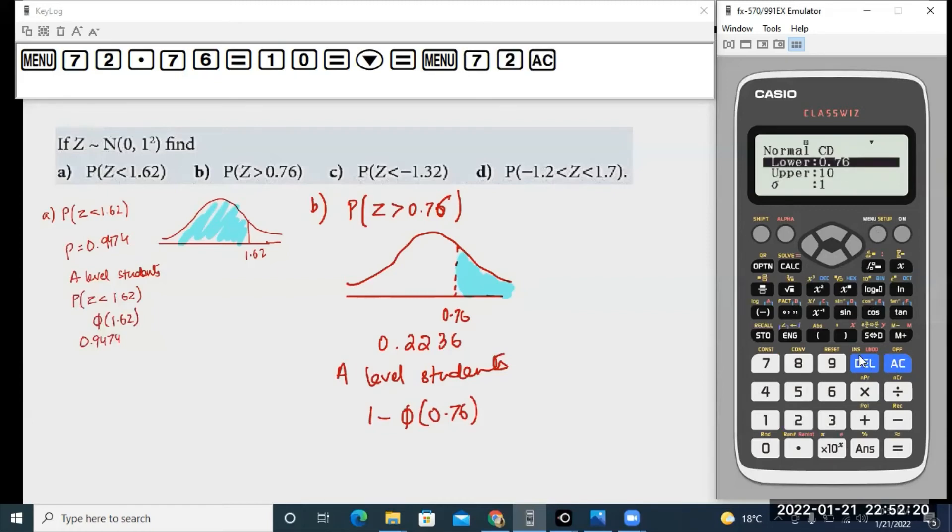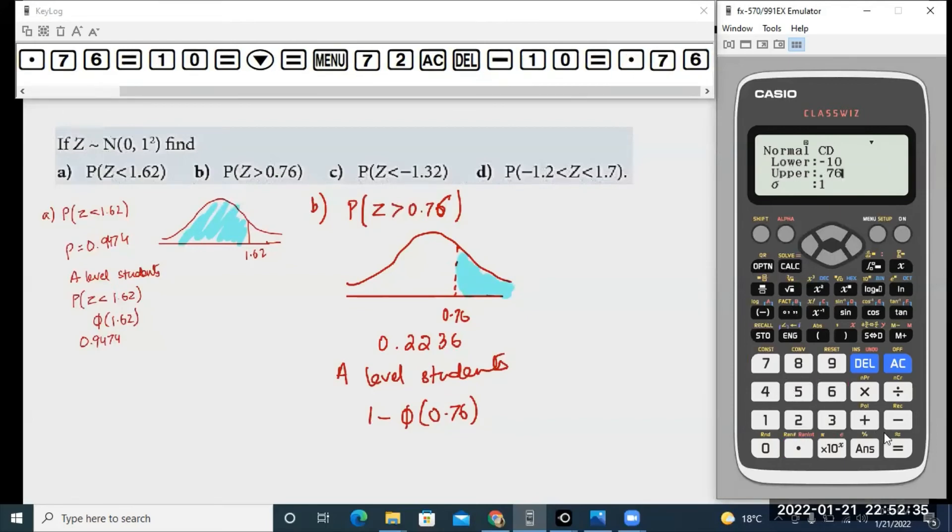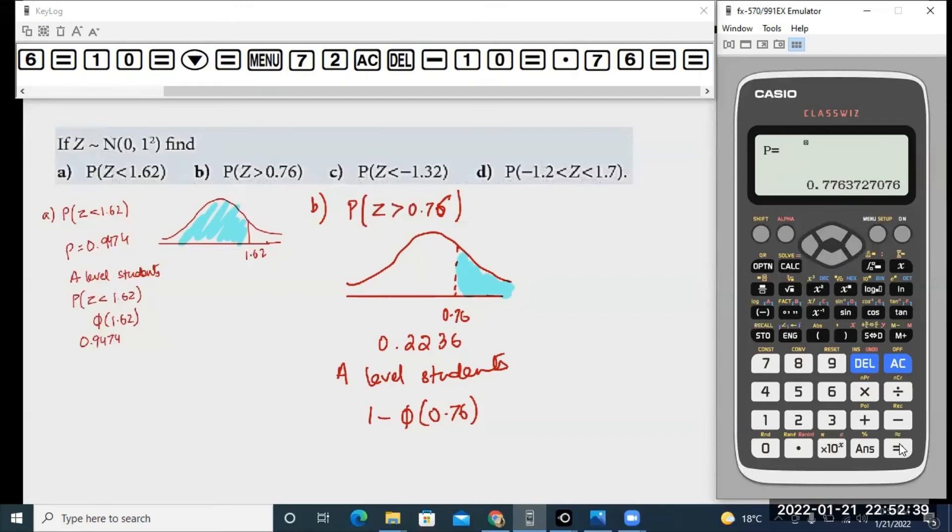You would clear this and instead write minus 10 again in the lower value, then on the upper value you would calculate 0.76. The other two things remain the same and you get your answer.